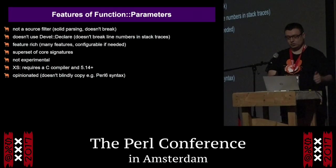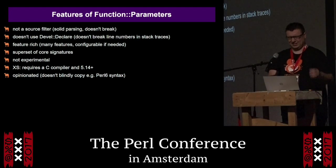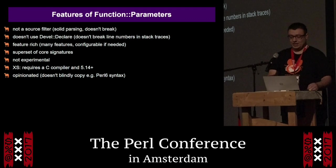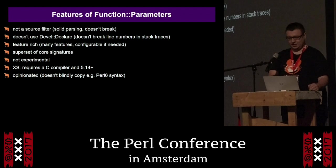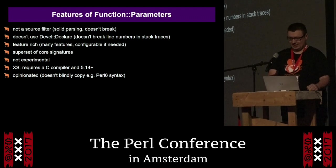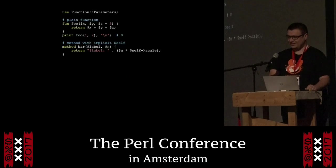Some features: it's not a source filter. It does not use Devel::Declare. So it's really solid syntactically — it doesn't break. It's feature-rich and most features are configurable. It provides everything that core signatures do and more. It is not experimental; it has been stable for years. It's written in XS, requires a C compiler and at least Perl 5.14. It runs on 5.14 stable and upwards. And it's somewhat opinionated — it doesn't just implement everything. You have to see if you like that or not.